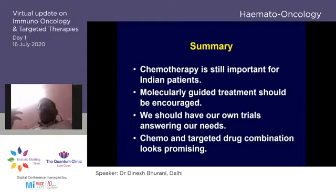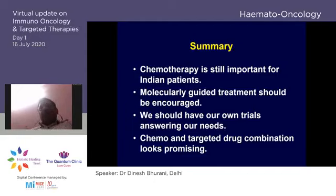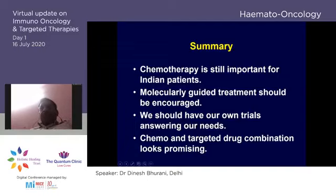In summary: chemotherapy is still important for MDM patients in our context. Molecularly-guided treatment should be encouraged — at minimum, 17p FISH and IGHV mutation status should be done. We should have our own trials answering our needs, as we cannot afford very expensive drugs. A combination of chemotherapy and targeted therapy looks promising and is the direction I would recommend. Thank you.